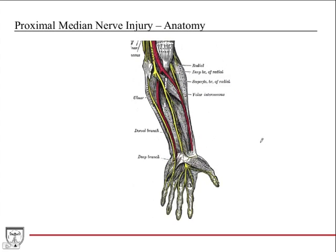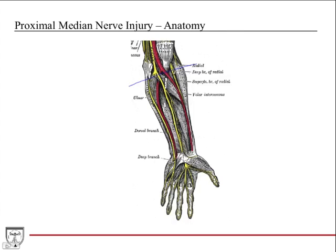The second in the pair is the proximal median nerve injury. The big thing about saying proximal is that it's not at the wrist — it's more proximally in the forearm. The whole idea is that you're affecting the forearm compartment muscles by saying it's a proximal nerve injury.